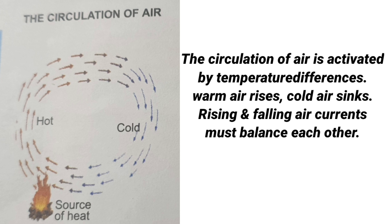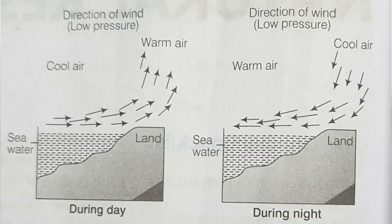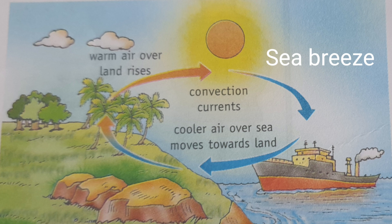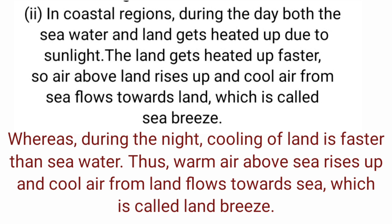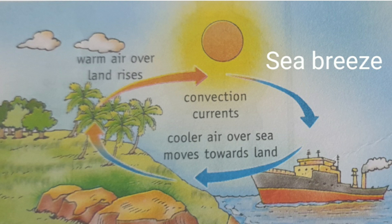In coastal regions during the day, the air above the land gets heated faster and starts rising, creating a region of low pressure. Air over the sea then moves to this area of low pressure. This movement of air from one region to another creates winds. The direction of wind is from sea to land during the day — this movement of air from sea to land is called sea breeze.